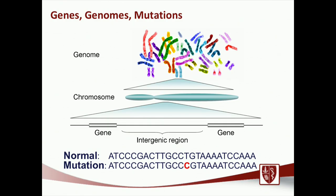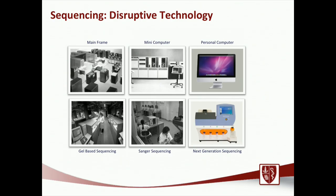Sequencing is the process of figuring out what these deviations are. We can't look at DNA — it's too small to see — so we have to use various methods. Just like there's been a revolution in personal computing, going from the mainframe to the mini-computer and now to the personal computer, there's been a parallel revolution in sequencing. Going back 40 to 50 years, sequencing was done using gel-based sequencing. This was entire laboratories, entire departments dedicated to sequencing, for example, one gene.